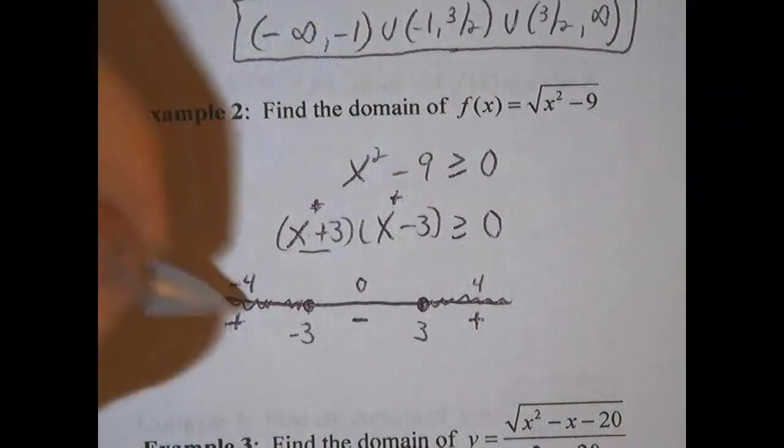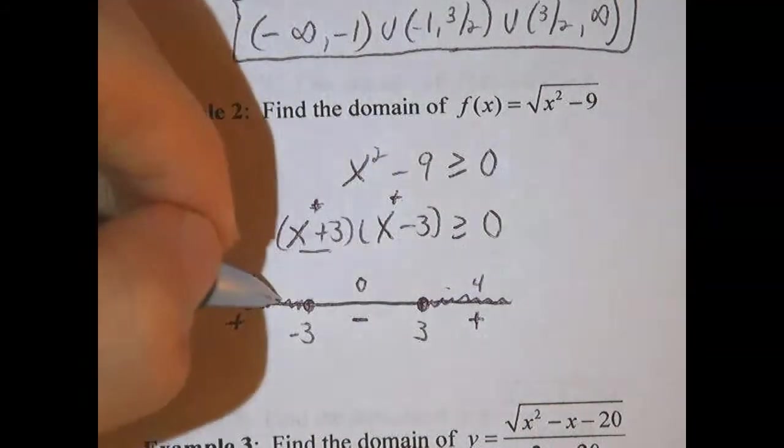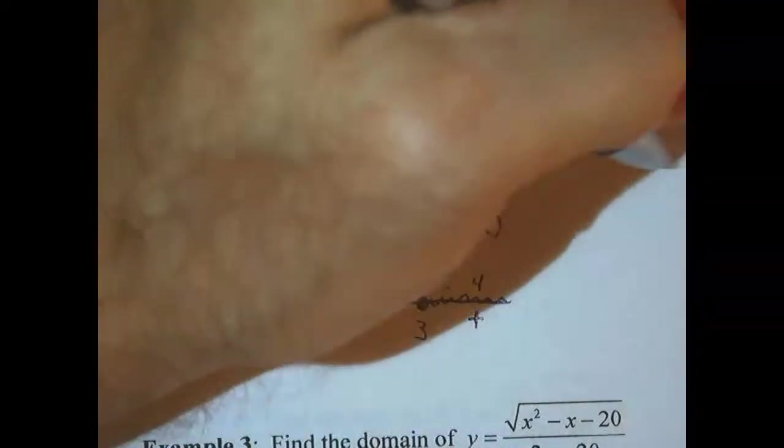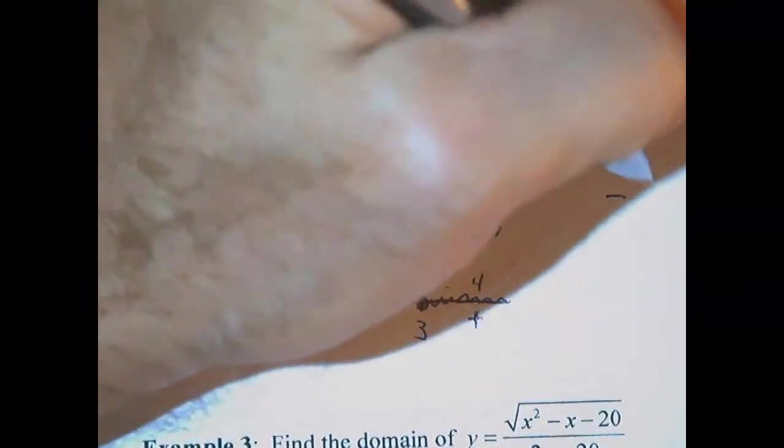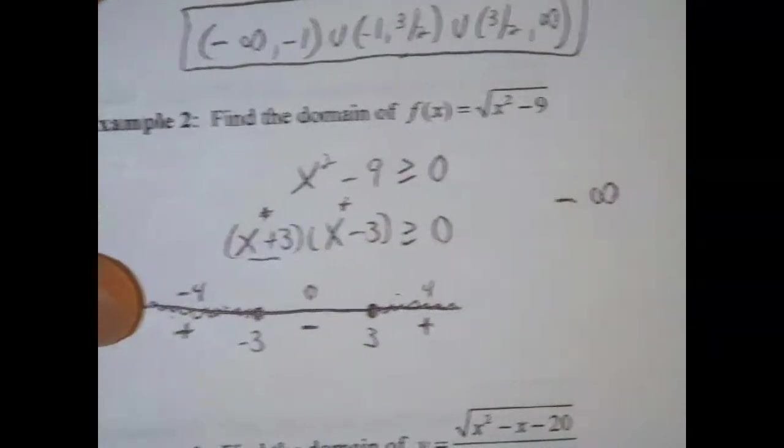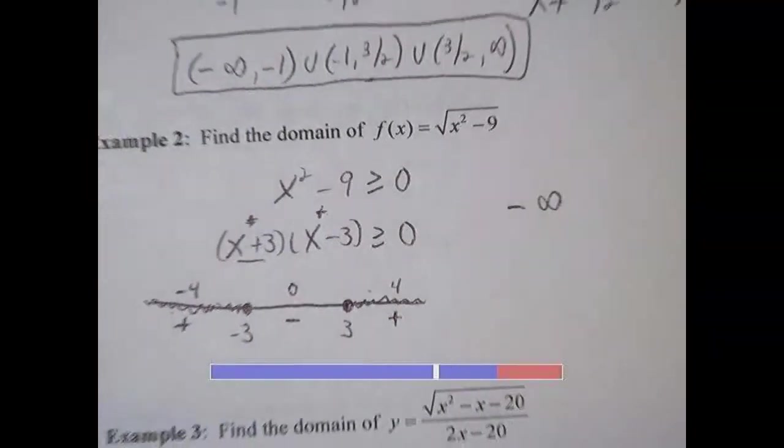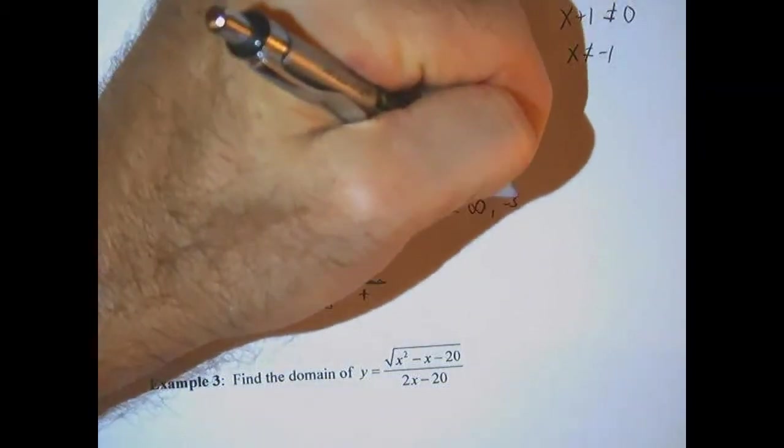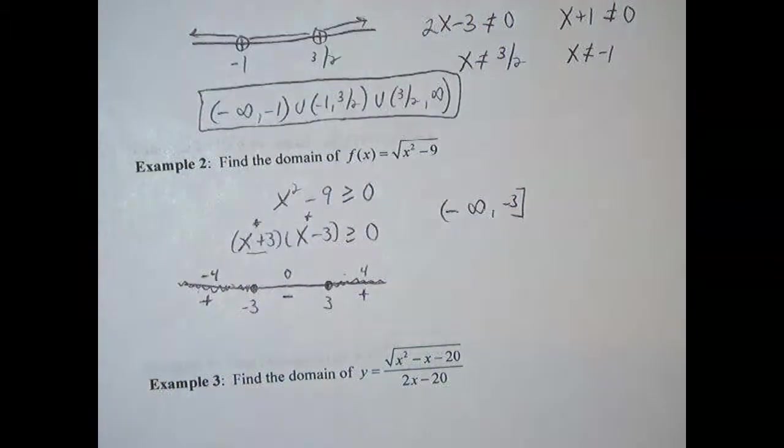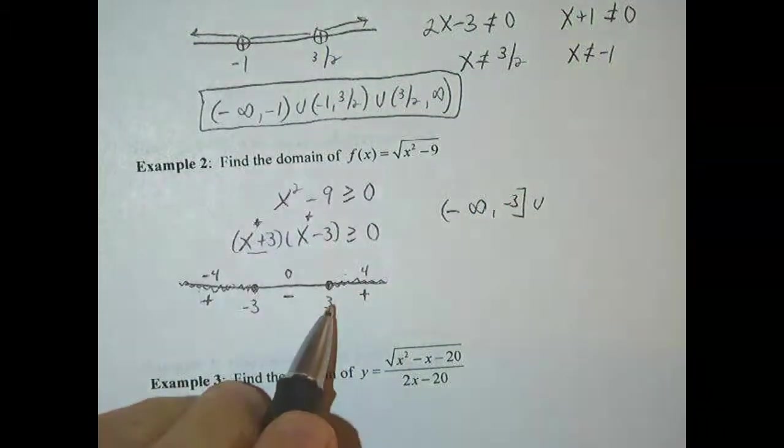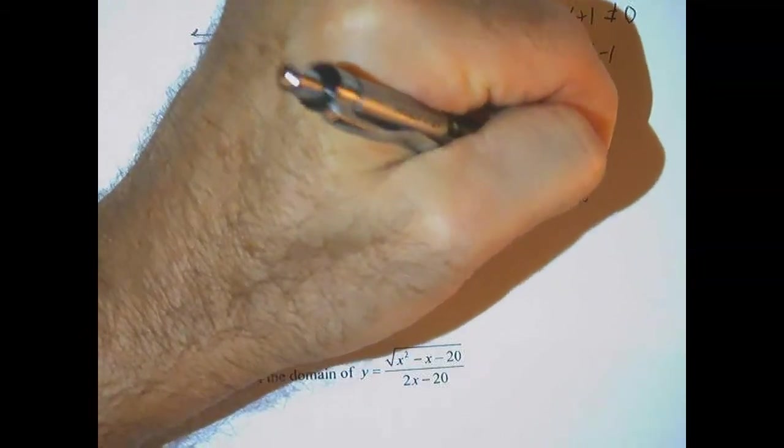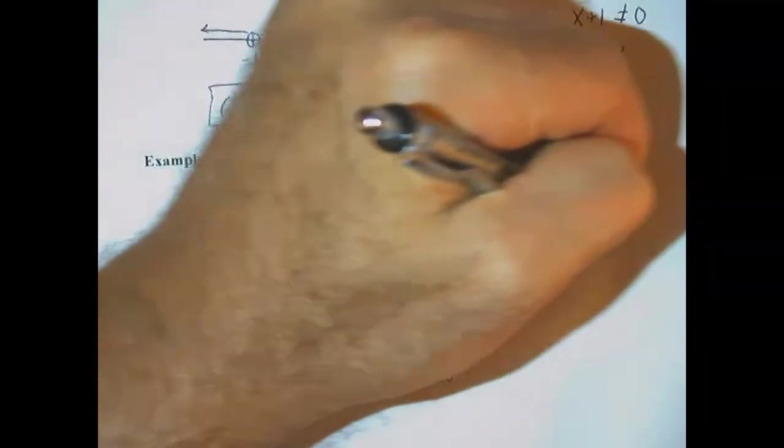Okay, so our solution is everything from just these two intervals on both sides of -3 and 3. So the domain would be from (-∞, -3] union with [3, ∞). There it is.